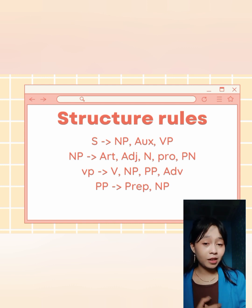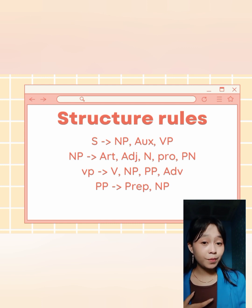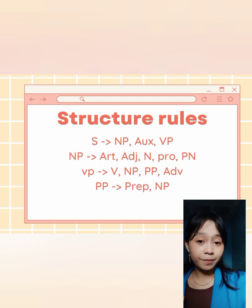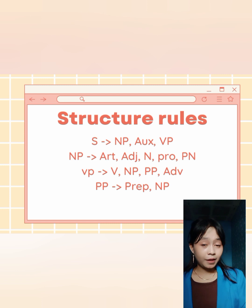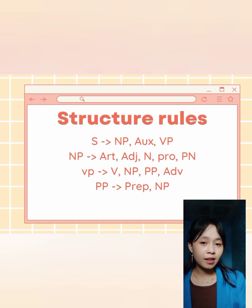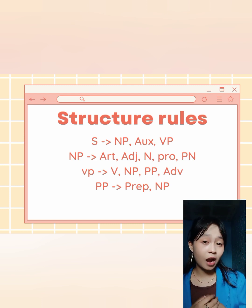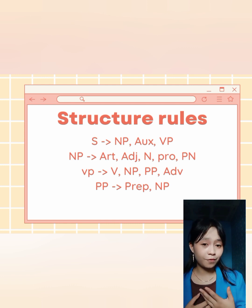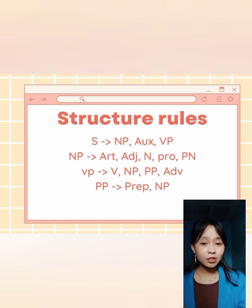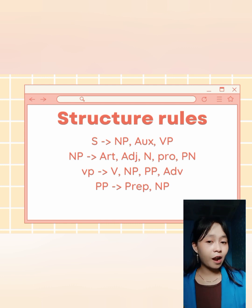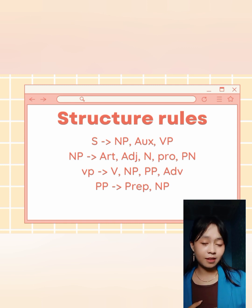A noun phrase (NP) includes article, adjective, noun, pronoun, and proper noun (PN). The verb phrase (VP) includes verb, noun phrase, prepositional phrase, and adverb. A prepositional phrase (PP) includes a preposition and a noun phrase.